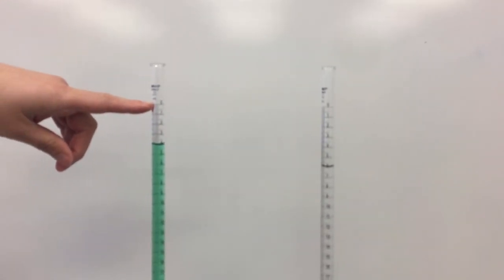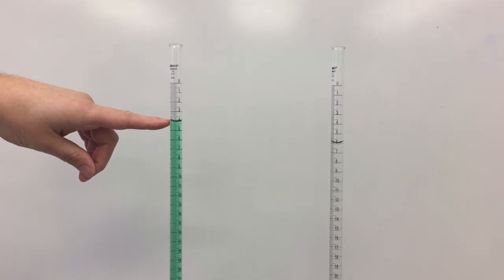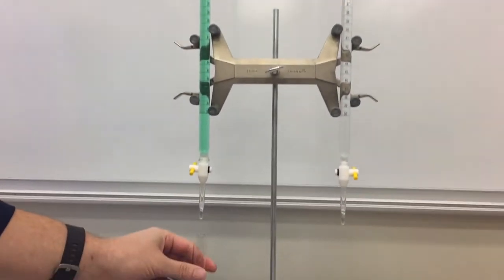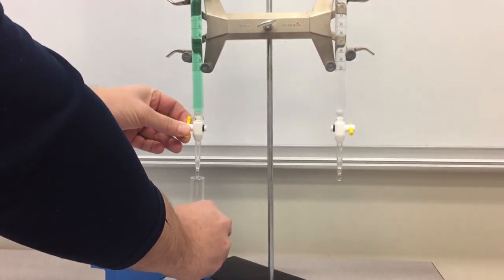Since we want to dilute 4 milliliters to 10 milliliters, first we're going to deliver about 4 milliliters from the burette into a test tube. At the end of the delivery, we'll take note of the final burette reading.